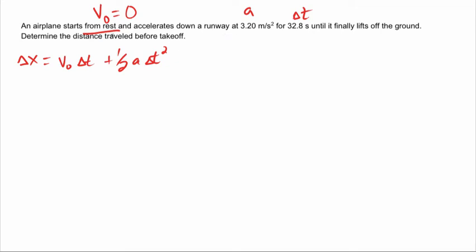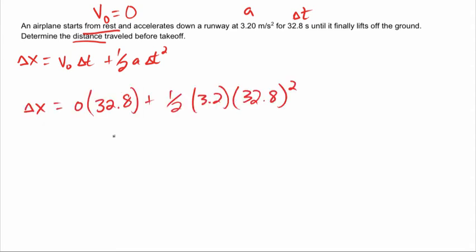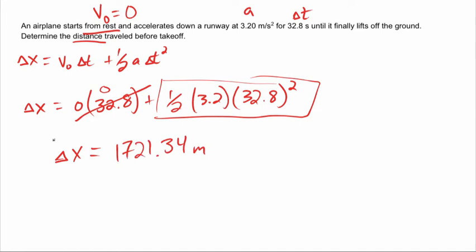So I know initial velocity, acceleration, time. Here's my equation. I don't need to rearrange because I'm trying to find distance. So let's just go ahead and look at this equation and plug in. What I have is this when I plug everything in. And so, again, look, like I said, if you start from rest, 0 times 32.8, that means all of this is 0. So that means this part is what I'm solving. So when I go ahead and solve that, I'm left with 1,721.34 meters as the distance traveled.